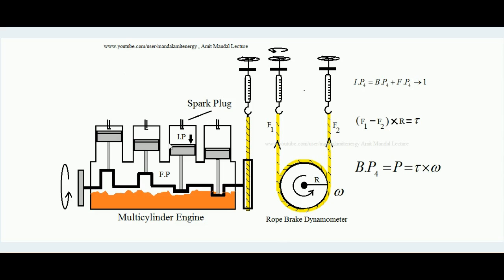This is a particular type of dynamometer called a rope brake dynamometer — also called a Prony rope brake dynamometer. Here we have a four-cylinder SI engine with spark plugs visible, a flywheel, crankshaft, and engine oil. The crankshaft is connected to this rope brake dynamometer. The side view shows its architecture: it consists of a drum — a cylindrical device — over which a rope is wound two or three turns.